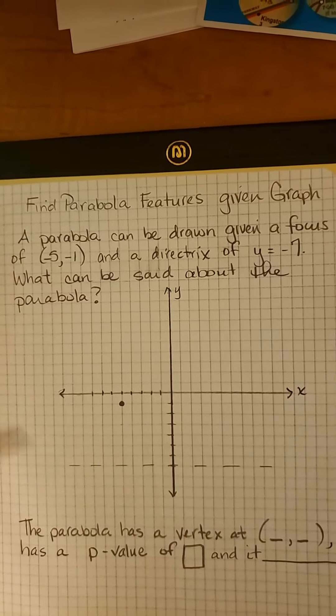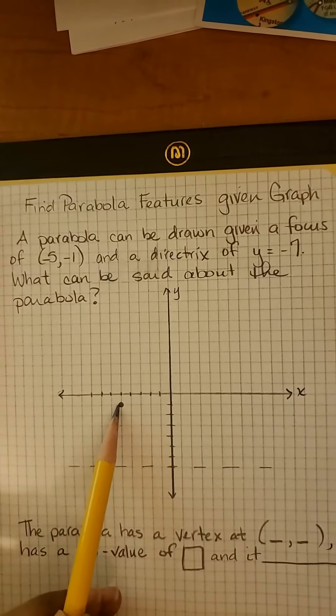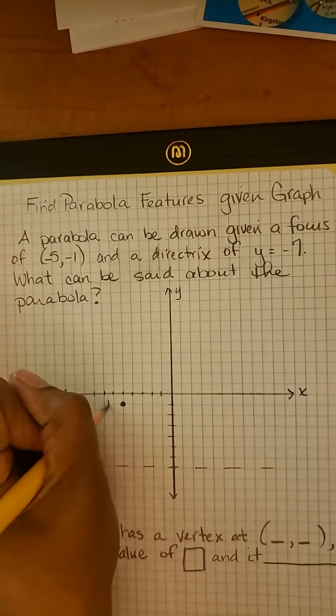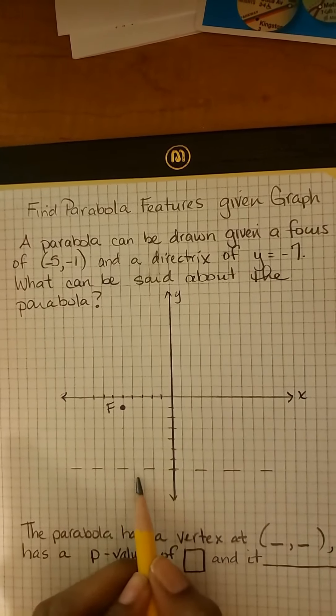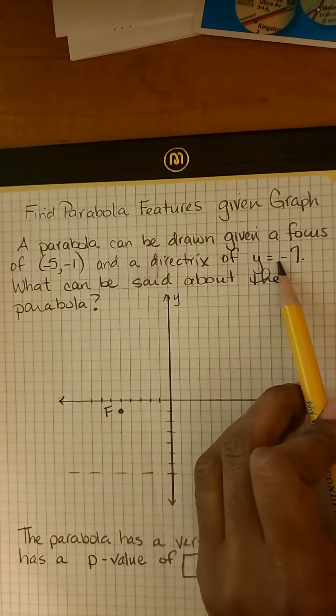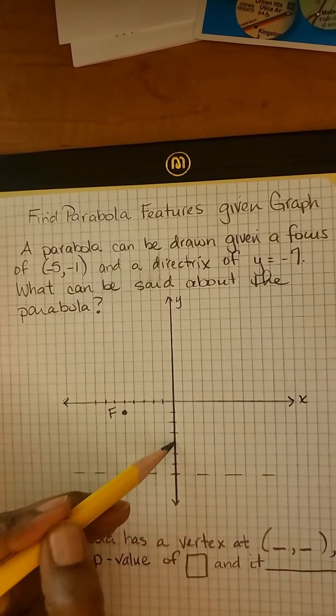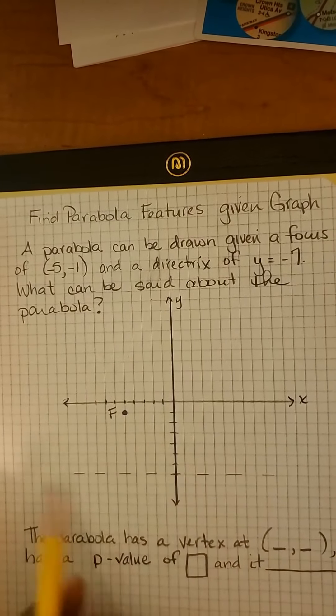They're giving us two things: the focus that's right here and the directrix which is y equals -7. So -1, -2, -3, -4, -5, -6, -7. This is the directrix.